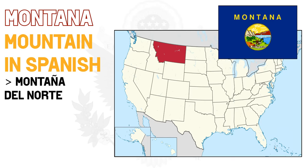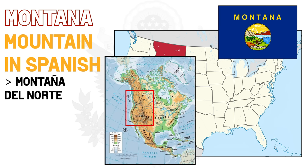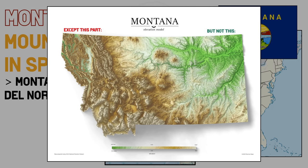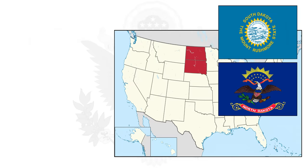Montana was proposed by the US government for the territory that ended up becoming Idaho, but then changed as they thought it had no meaning — only to be proposed again in 1864 for what is now Montana. There were some complaints, especially because it was somewhat misleading since Montana itself is not that mountainous, and the name of Shoshone — a native tribe — was proposed. But the Committee of Territories ignored it and stuck with Montana.